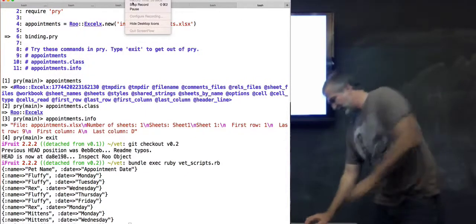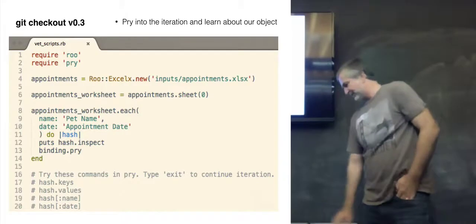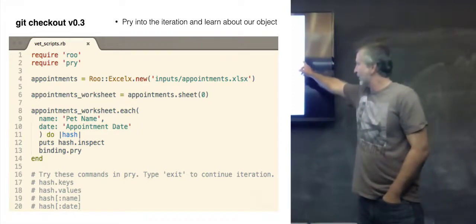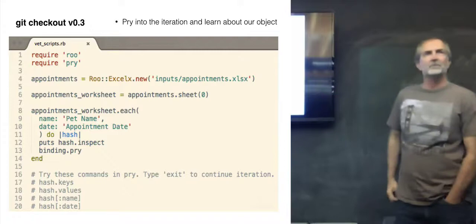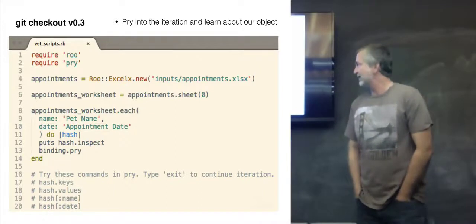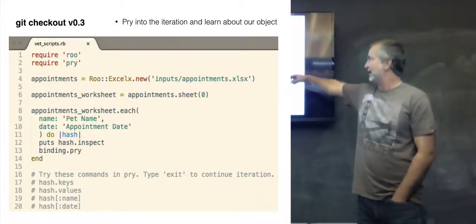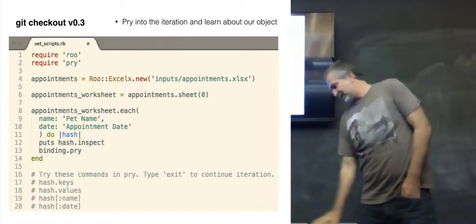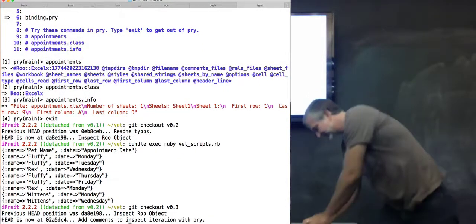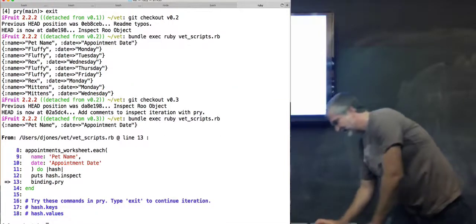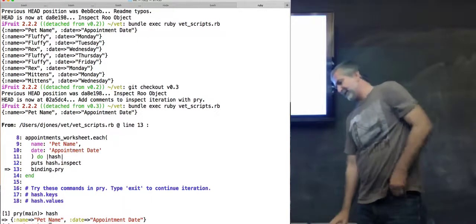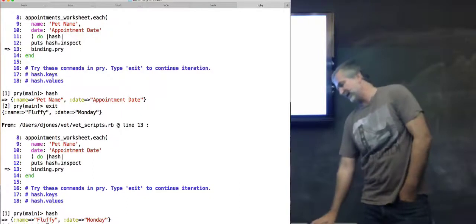But since we're more interested in improving in Ruby, less interested about getting really good at the Roo object, we're going to move on a little bit from here. There's no new code on this one, but we're creating a new variable, it's sheet zero of this Roo object. And then we're going to put the binding right in the middle of this iteration, and what that's going to do is help us to better understand how to call things. For example, we see the keys, and now there's the name and date and they're calling from the columns pet name and pet date.